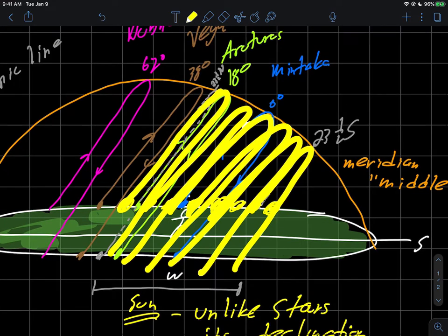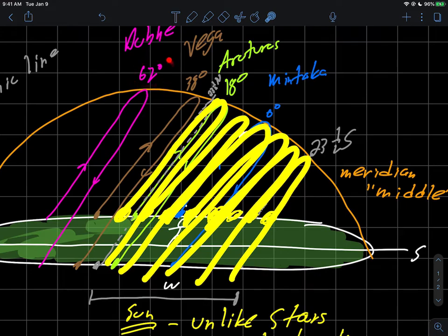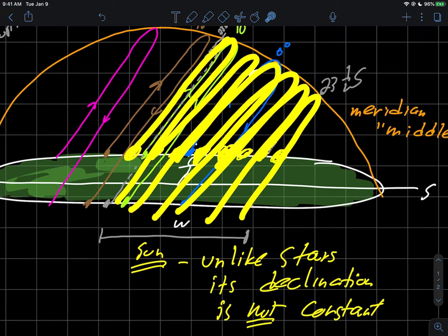Remember, Dubhe for example always sticks on a 62 degree declination every time it rises and sets. It never changes. The sun doesn't do that. It goes back and forth on the celestial sphere as it rises.